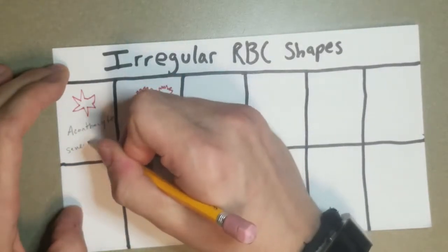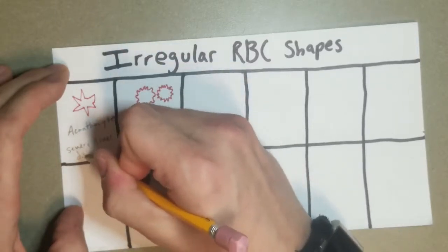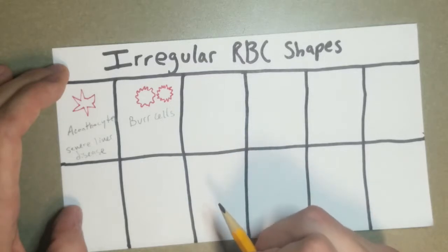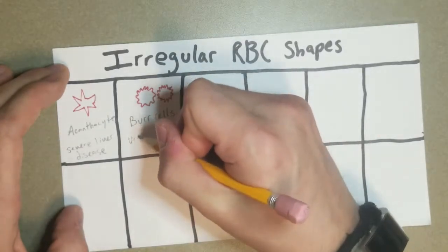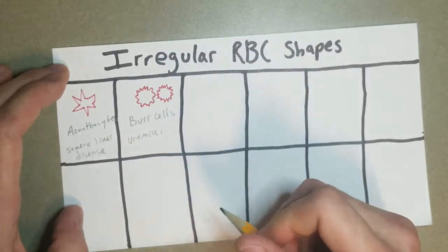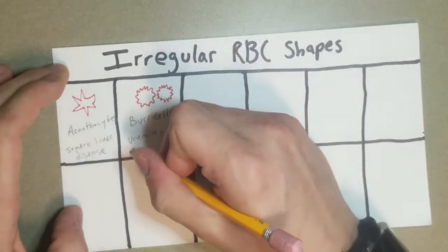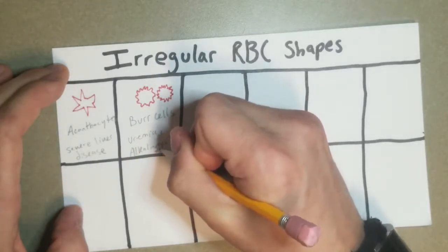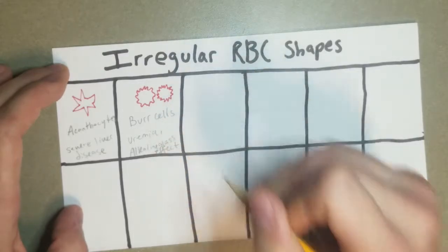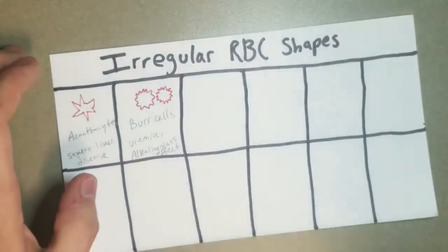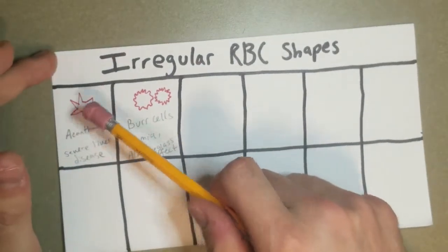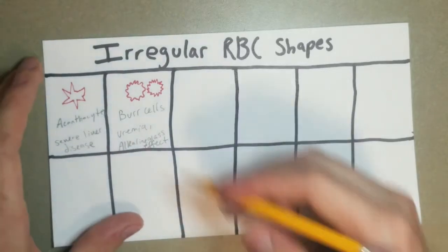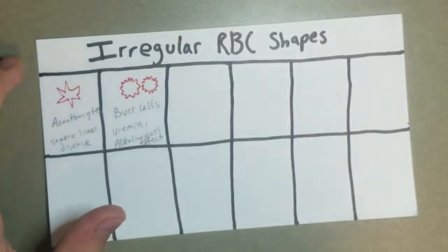The cause, severe liver disease being the most common cause. And then for these, for the echinocytes or the burr cells, you have uremia being a leading cause. Sometimes they can be an artifact, like for instance, alkaline glass effect. That's less common though. Uremia is going to be the main reason you might have that there. And these, like I said, are irregularly spiculated. These ones, the burr cells are regularly spiculated. Basically, they're symmetrical, or a little bit more perfect.